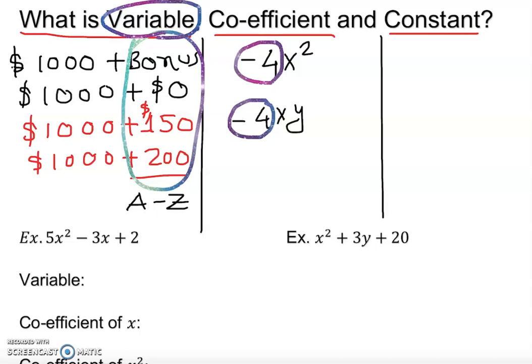Now constant, any number in the number line is the constant, which is fixed. Earlier when I talked about variable, I talked about variable and 1000 plus the bonus. So 1000 in this case is fixed, so that 1000 will become your constant number, which is fixed number, that 1000 dollar.